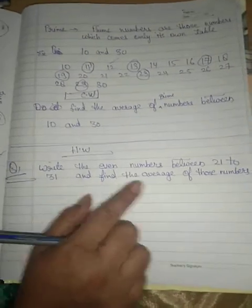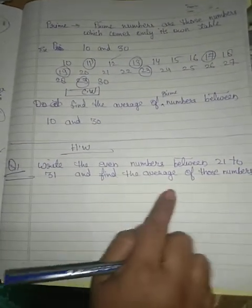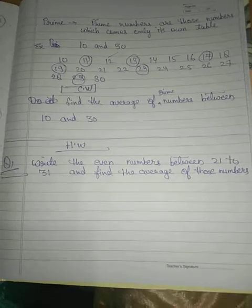Write the even numbers between 21 to 31 and find the average of those numbers. Clear everyone?